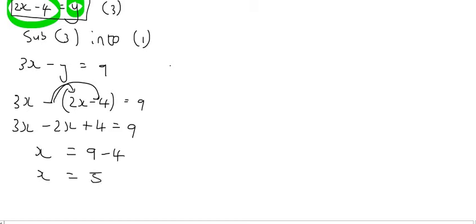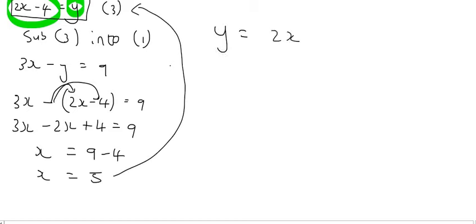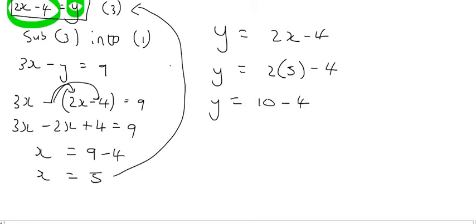What are we looking for now? We're looking for y. It's always best to substitute that answer back into equation number 3, because equation number 3 already has y by itself. So all we need to do is put x as 5 in brackets. That gives us 2 times 5, which is 10 minus 4, and so y is equal to 6.